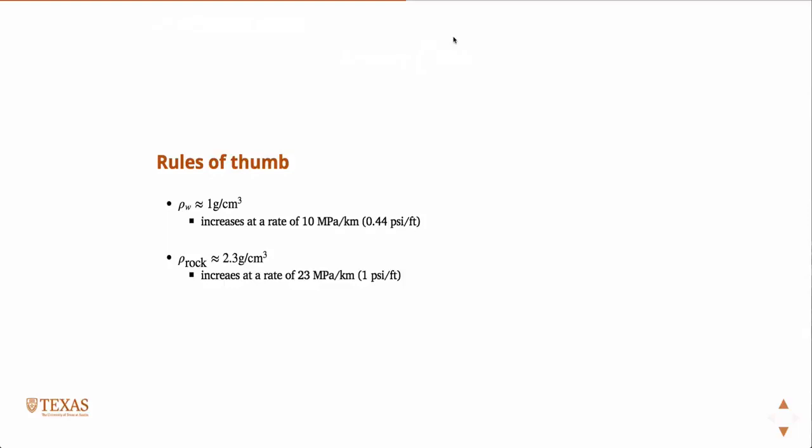A couple of rules of thumb, rules of thumb imply things you should just know. And in this class, things you should just know imply things that will be on exams. So the density of water is approximately one gram per cubic centimeter, and that increases at a rate of 10 megapascals per kilometer, or 0.44 psi per foot. So you should just know those things. 10 megapascals per kilometer, 0.44 psi per foot.